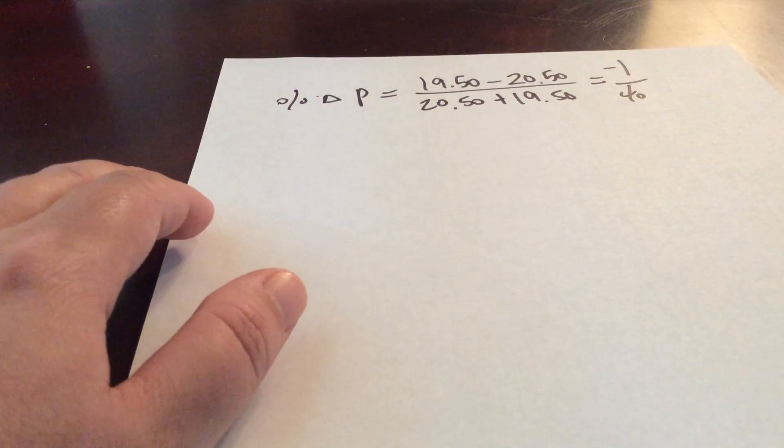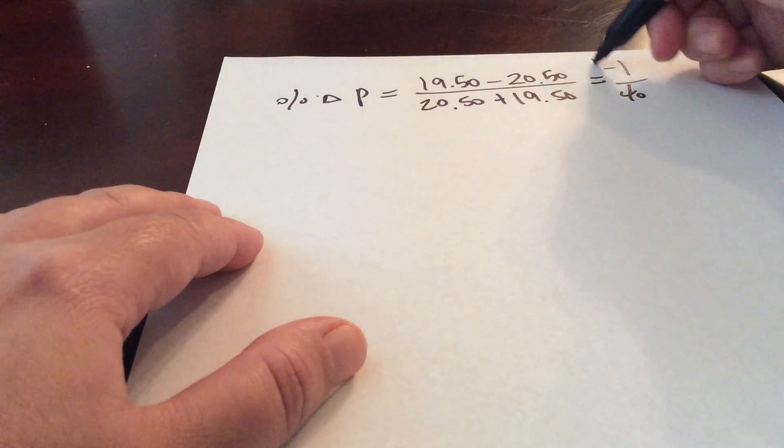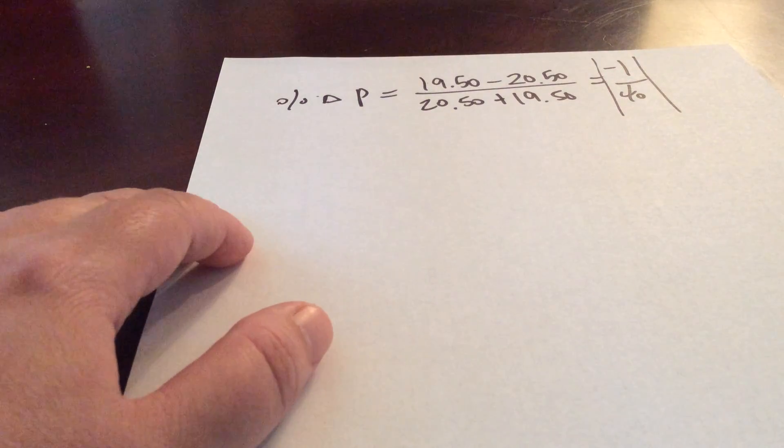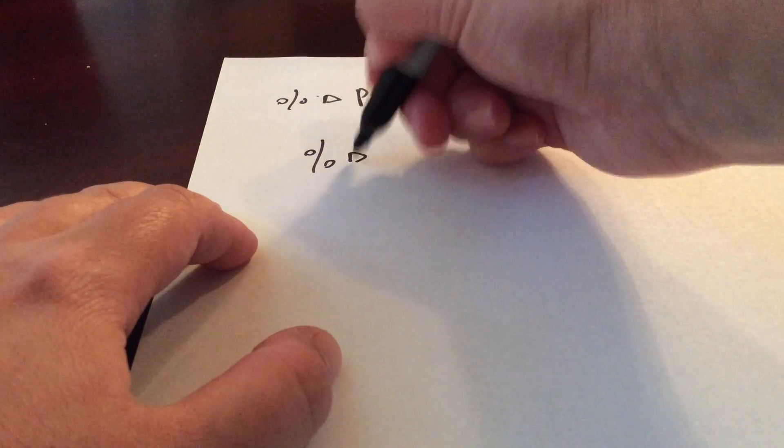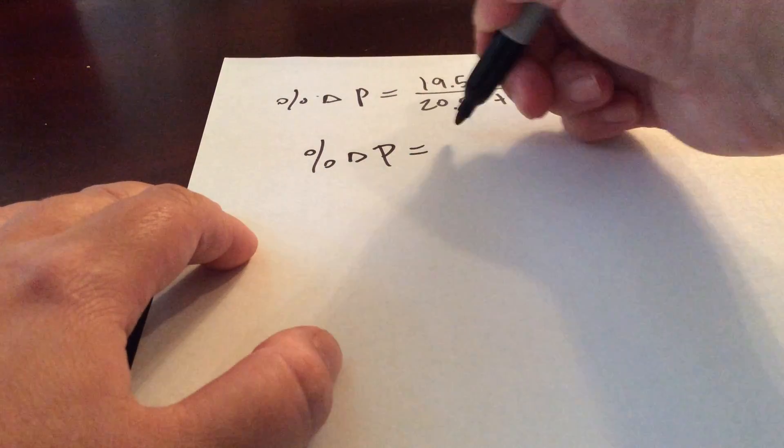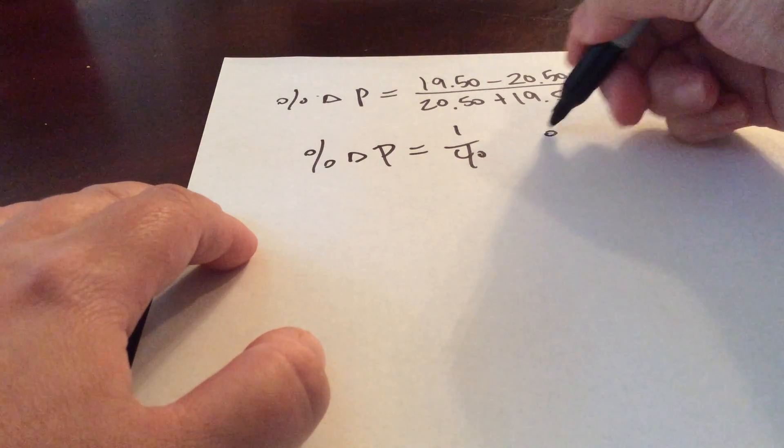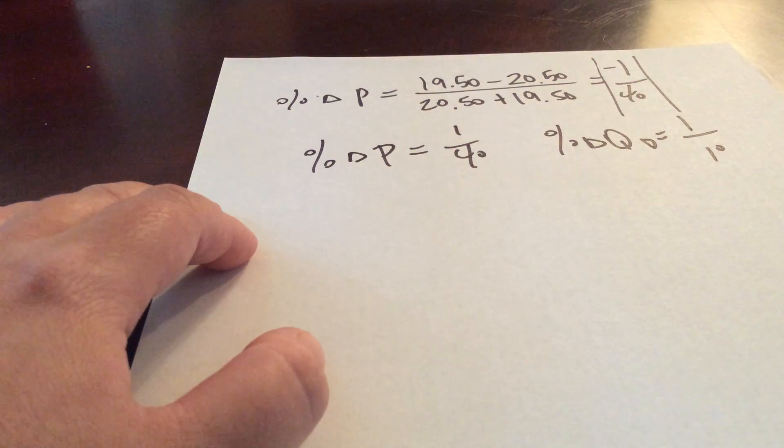The important thing to note with this equation is we're going to take the absolute value. So that means if either portion, when you're working these out, comes out to be negative, you're just going to make that positive. So we find that our percentage change in price is 1 over 40. And our percentage change in quantity demanded is 1 over 10.